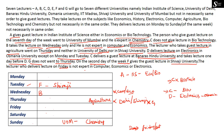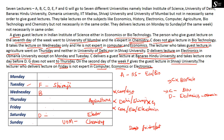The lecturer who delivers a lecture on Friday is not an expert in computers, economics, or electronics. Since D is an expert in electronics, D cannot be on Friday. Therefore D must be on Saturday, with Osmania University and electronics. One day before D means C is on Friday, with Banaras Hindu University. C is also confirmed not to be an expert in biotechnology.